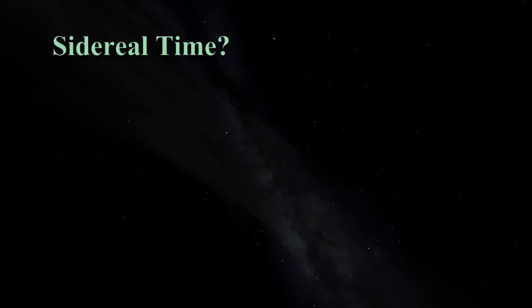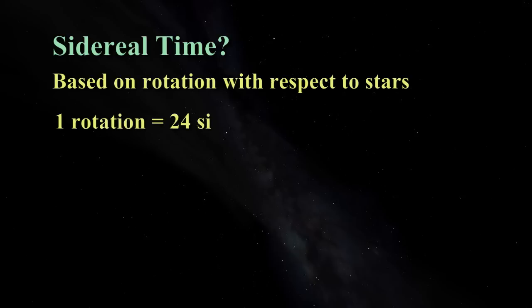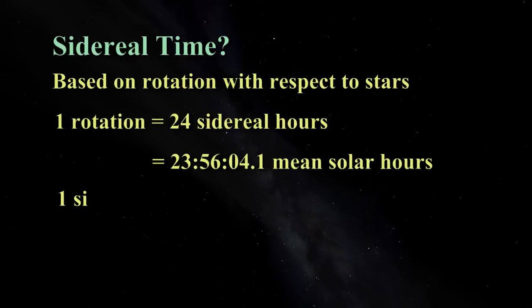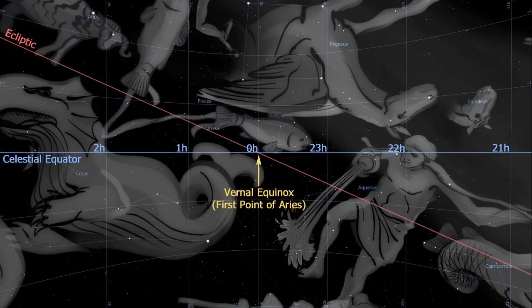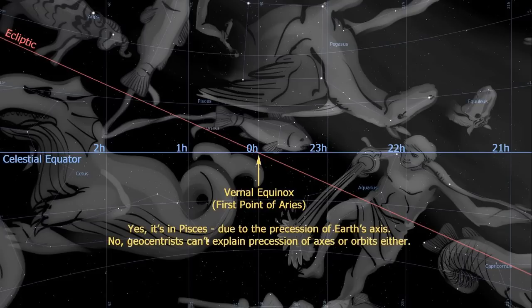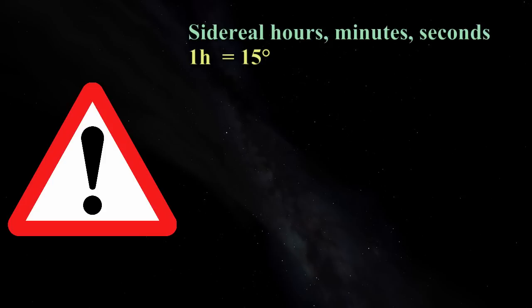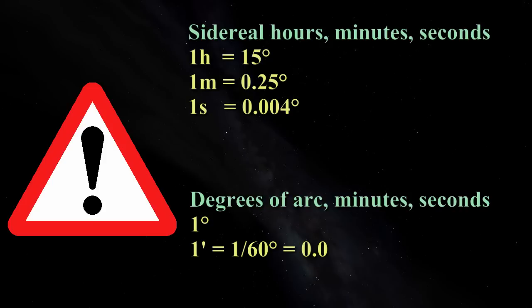First, some notes on terminology. Sidereal time divides one sidereal rotation of Earth into 24 hours. These are not the same as mean solar hours of the 24-hour clock we use day to day. One hour of sidereal time corresponds to 15 degrees of rotation. Right ascension is the angular distance in sidereal hours, minutes and seconds measured eastward, from the point of the vernal equinox on the celestial sphere. An observer's local sidereal time is the right ascension value at his local meridian. Note that minutes and seconds of sidereal time, when used to measure angles, are not the same as arc minutes and arc seconds that we've seen before. You'll see sidereal measurements indicated with H, M and S, and we'll convert them as necessary.